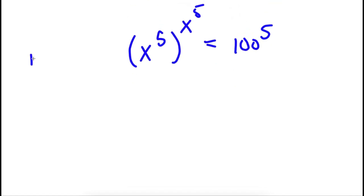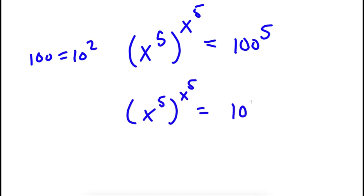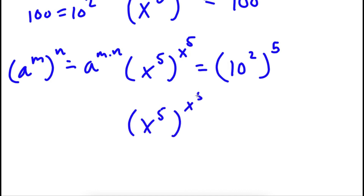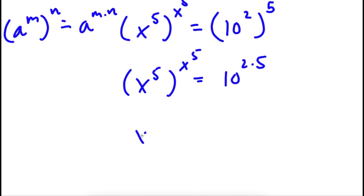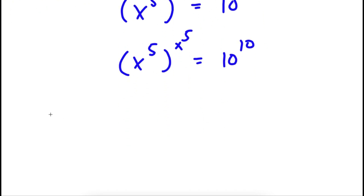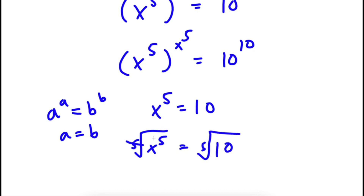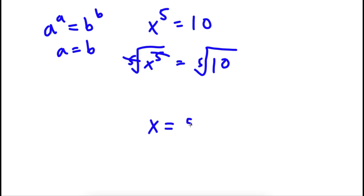Now 100 is equal to 10 squared, so I have x to the power of 5, to the power of x to the power of 5, is equal to 10 squared to the power of 5. Using the property a to the power of m to the power of n equals a to the power of m times n, I get 10 to the power of 2 times 5, which is 10 to the power of 10. Now if I have something in the form a to the power of a equals b to the power of b, then a equals b. So in this case x to the power of 5 is equal to 10. Taking the fifth root on both sides, I'm left with x is equal to the fifth root of 10.